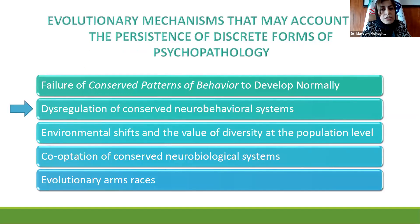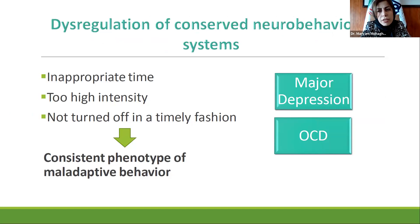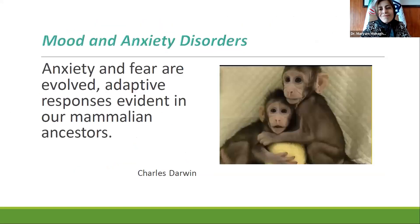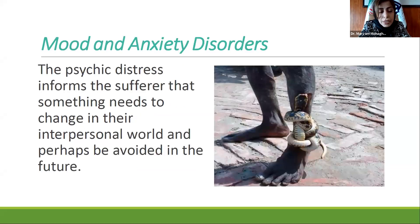The next mechanism for the persistence of psychopathology is dysregulation of conserved neurobehavioral systems. If normal behavior patterns are initiated at an inappropriate time, or at too high an intensity, or are not turned off in a timely fashion, this could lead to a consistent phenotype of maladaptive behavior. Major depression and OCD are examples. Darwin in 1872 argued that anxiety and fear are evolved adaptive responses evident in our mammalian ancestors, which provided selective advantage by altering facial expressions and bodily cues to alert other members of the group about imminent danger — it helped them to survive.